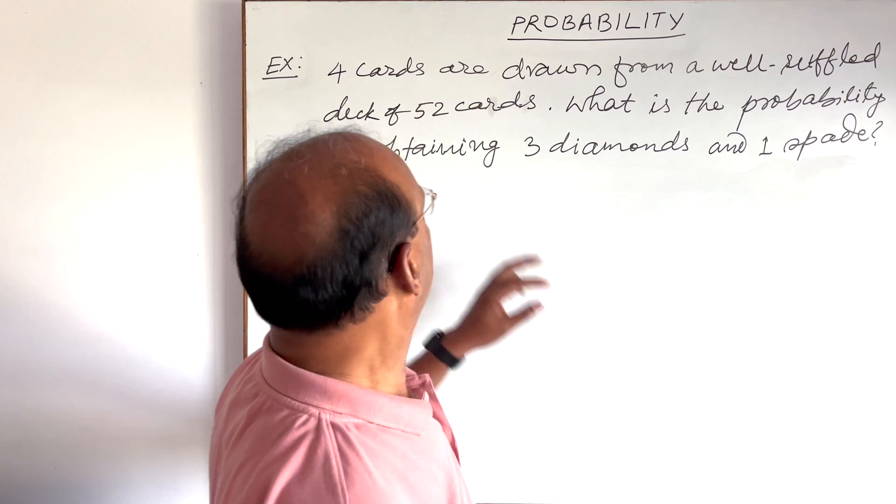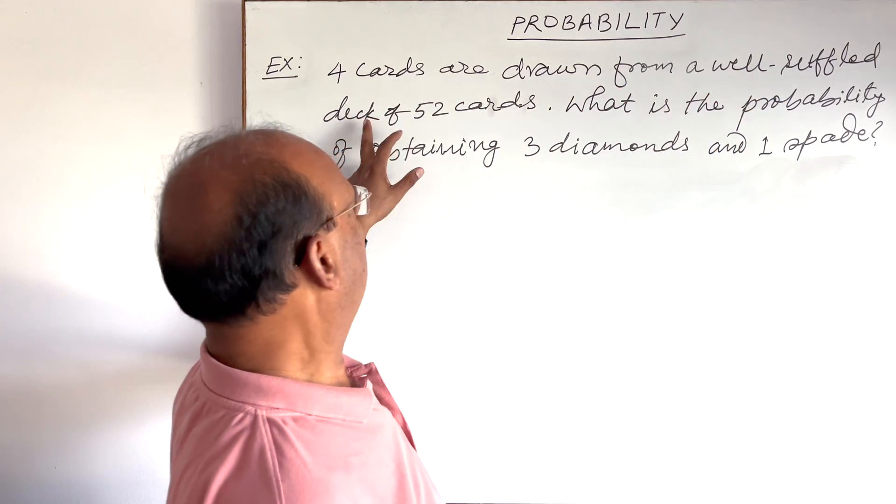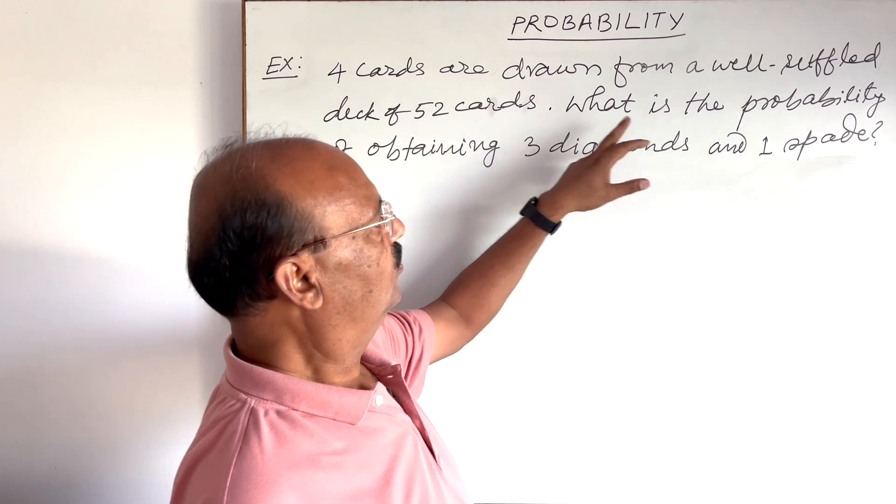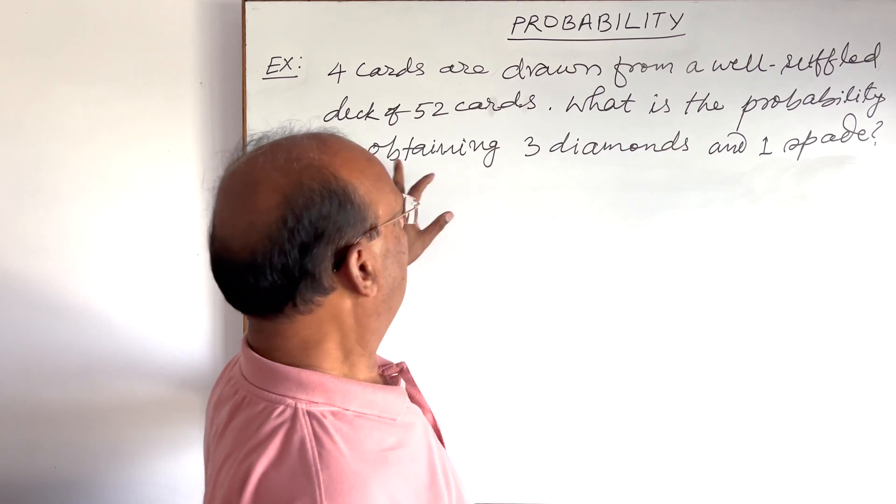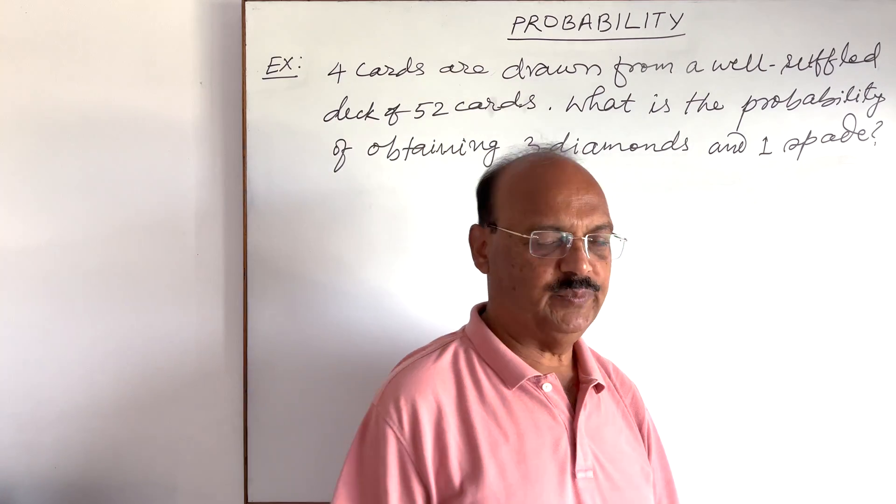Here the question is: four cards are drawn from a well-shuffled deck of 52 cards. What is the probability of obtaining three diamonds and one spade?